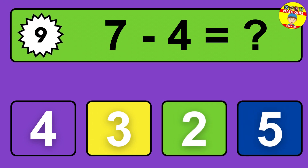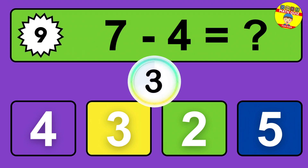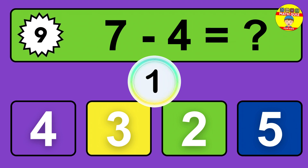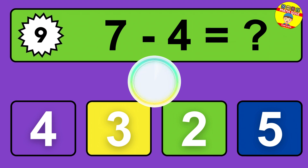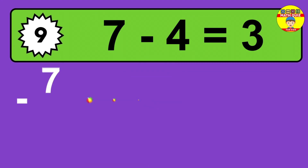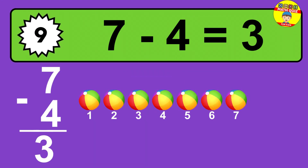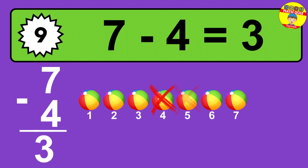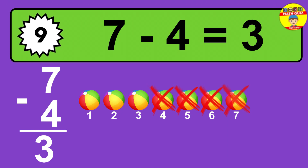Question nine: seven minus four equals what? The answer is seven minus four is three. Let's count it: one, two, three.